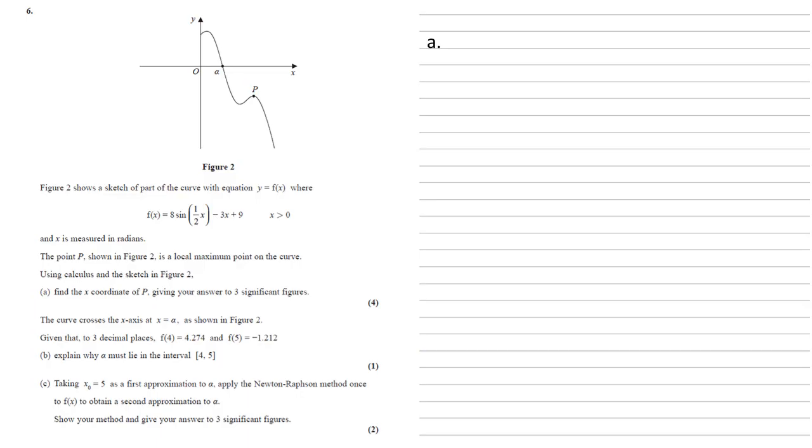So we've got 8 sine half x. We're going to differentiate that - the differential of sine is cos. And as we've got that half x inside the sine, the multiple, the half, is going to come out to the front, so that will become a half times 8 cos half x minus 3x differentiates to minus 3, and the 9 differentiates to 0. So f dash x is going to equal 4 cos half x minus 3.